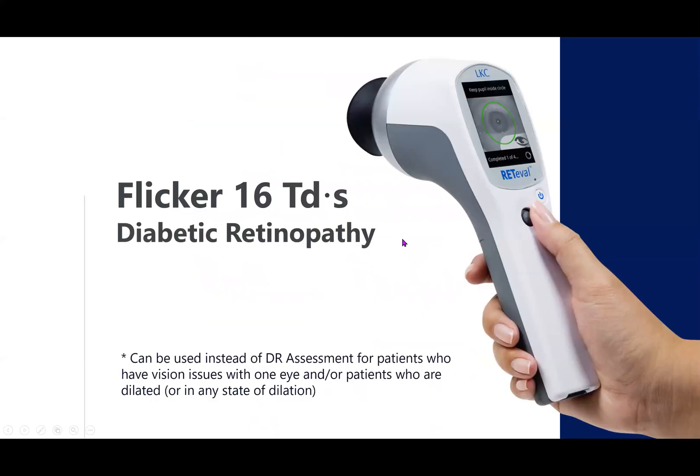The next test that I'm going to review is the Flicker 16 Troland test, which is also used for diabetic retinopathy. Now this test can be used instead of the DR assessment for patients who have vision issues with one eye. Remember that the DR assessment uses the best score from the left to right eye. And so if you're only dealing with one eye, you're not getting a proper measurement. And so the diabetic retinopathy test is probably not for that patient who has vision issues with one eye. The other thing is if you have a patient who's dilated or in any state of dilation, you can't use the DR assessment protocol because it has a pupil response component. So instead of not doing anything, you can run this test.